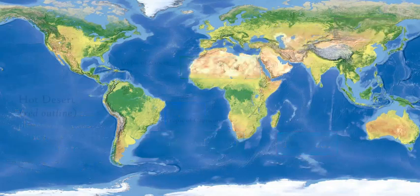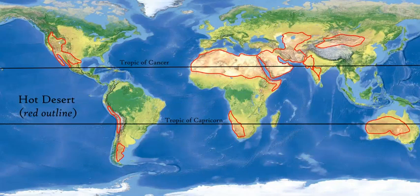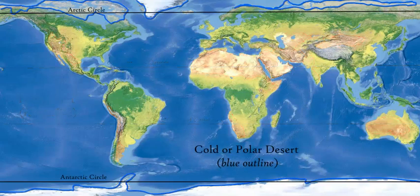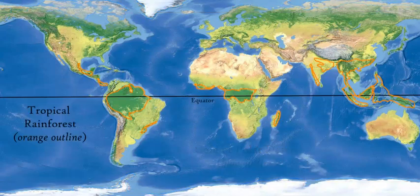Hot deserts are located in various locations — both in Africa, in North and South America, Asia and Oceania. Cold deserts are located mostly around the poles. A desert denotes a minimum amount of rainfall that can fall over a year, which indicates a drier climate. So it can be hot or cold based on temperature, but the precipitation is pretty much consistent. So we've discussed the majority of the tropics with the deserts.